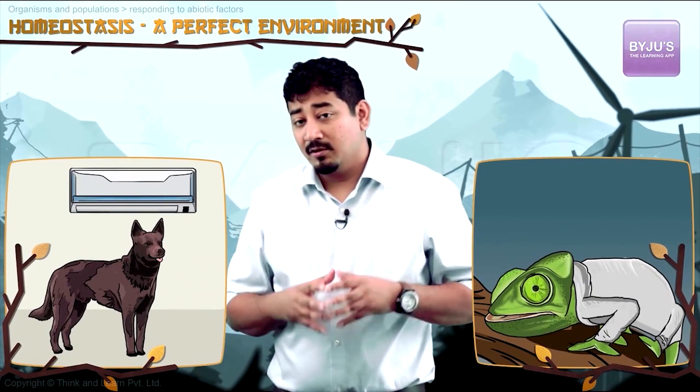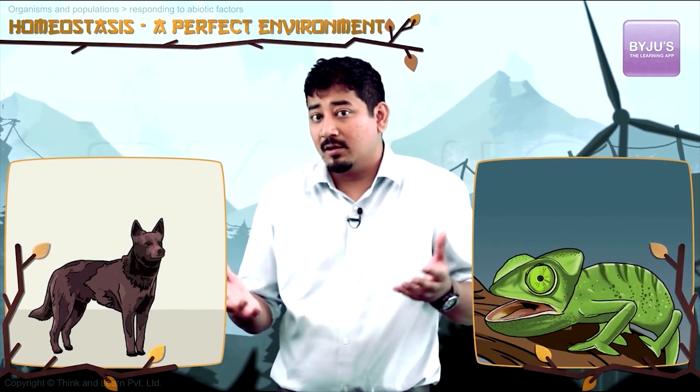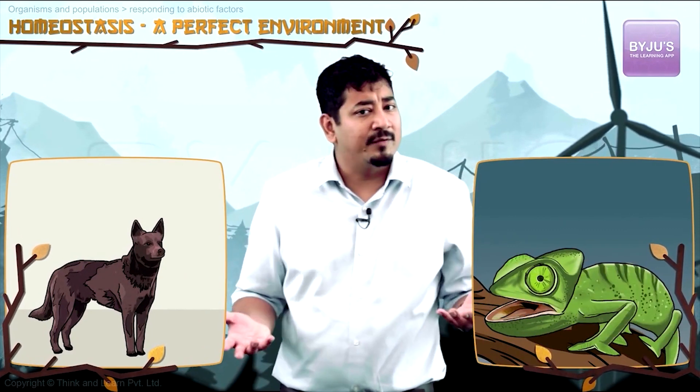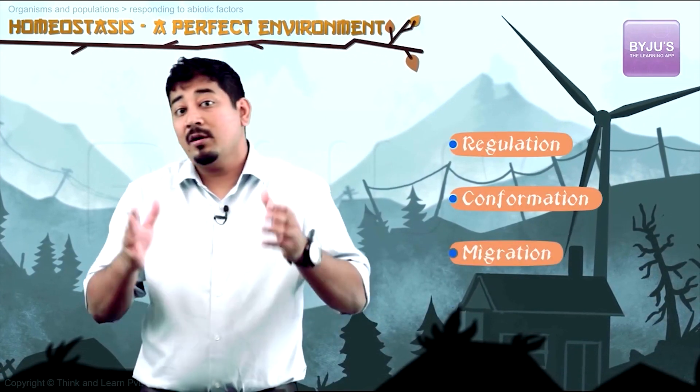It is quite straightforward for us when it comes to maintaining homeostasis. But how do other organisms cope with this situation? Dogs don't have ACs and reptiles don't wear fur coats to stay warm in the winter. So, what do they do to survive? Various organisms do a multitude of things to ensure survival in homeostasis. We're going to broadly characterize them as either regulation, conformity, migration, or suspension.